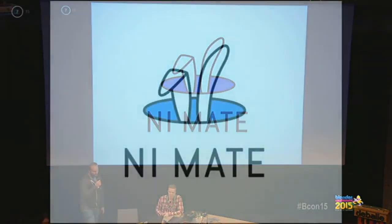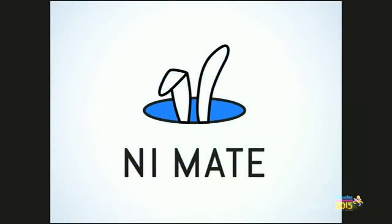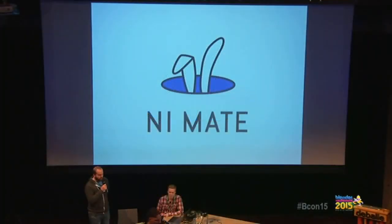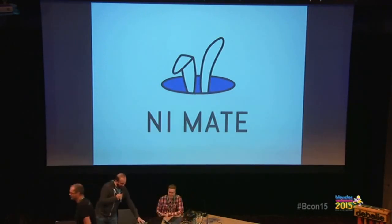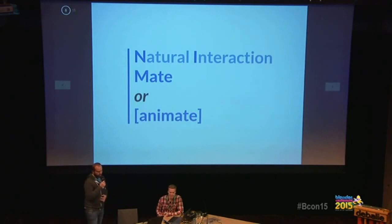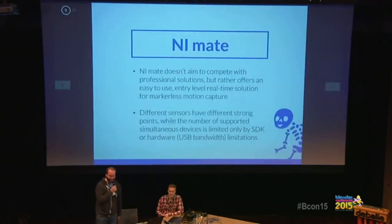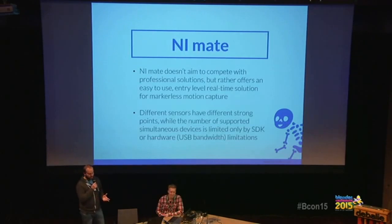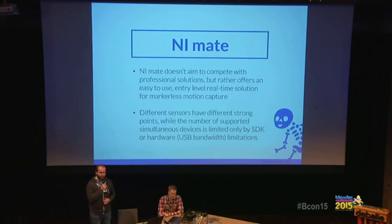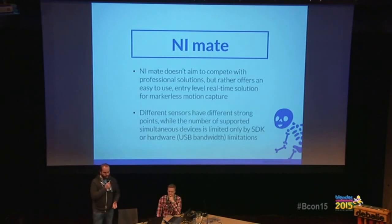Going into our own software, Enimate, which has been around for about three and a half years — we released the beta in January 2012. The name comes from 'natural interaction mate,' or animate. Enimate doesn't aim to compete with professional solutions on the market, but tries to provide an entry-level point for people to get into motion capture and use it in easy workflows.